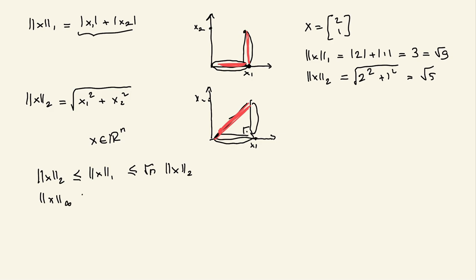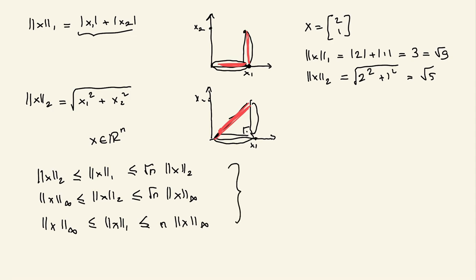For the infinity norm, you can write: ||x||_∞ ≤ ||x||_2 ≤ sqrt(n) * ||x||_∞, and also ||x||_∞ ≤ ||x||_1 ≤ n * ||x||_∞. Combining these, the ordering from smallest to largest goes: ||x||_∞ ≤ ||x||_2 ≤ ||x||_1, and with the scaling factors: n*||x||_2, sqrt(n)*||x||_2, and n*||x||_∞. This is an important property relating different vector norms, and you can also produce geometric representations using their definitions.